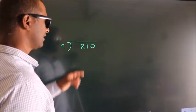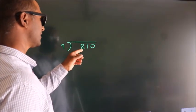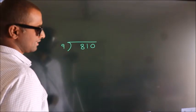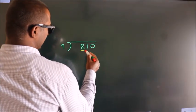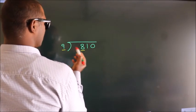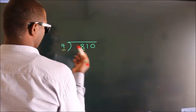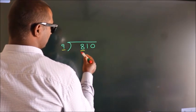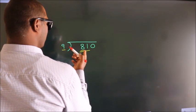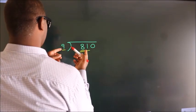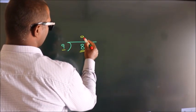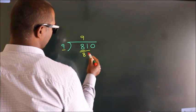How to divide 810 by 9. Here we have 8, here 9 — 8 is smaller than 9. So we should take two numbers: 81. When do we get 81? In the 9 table, 9 nines are 81.